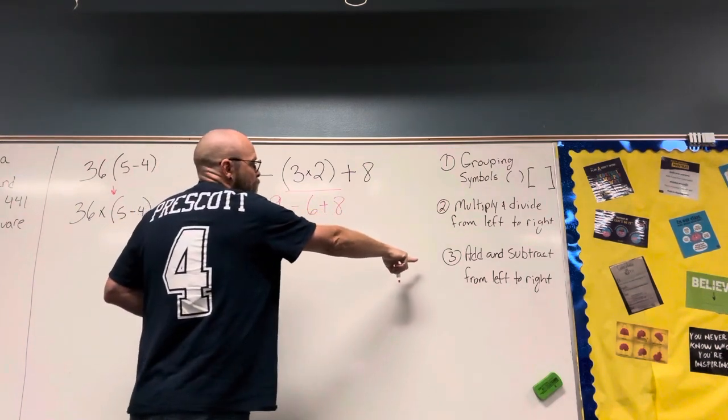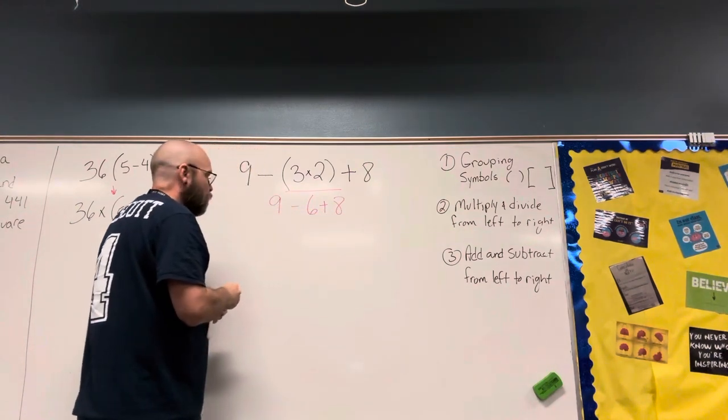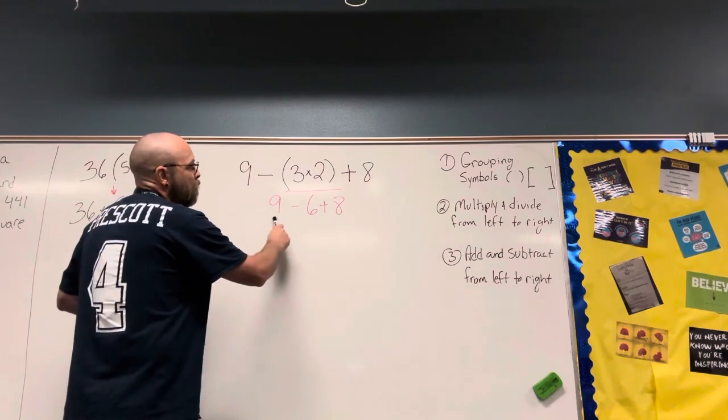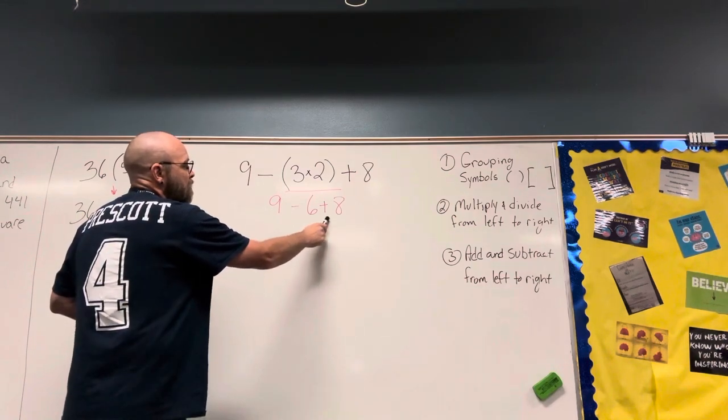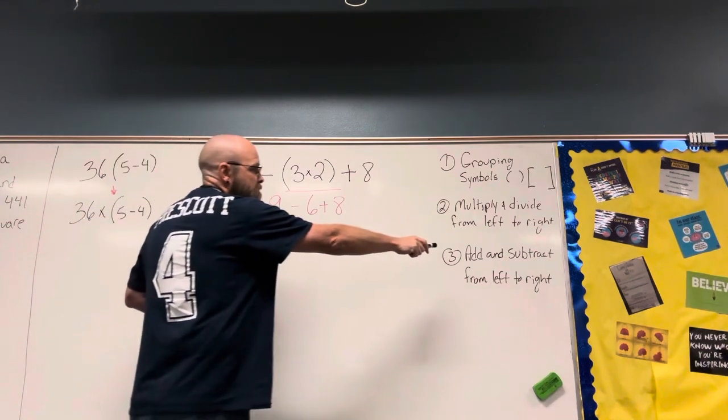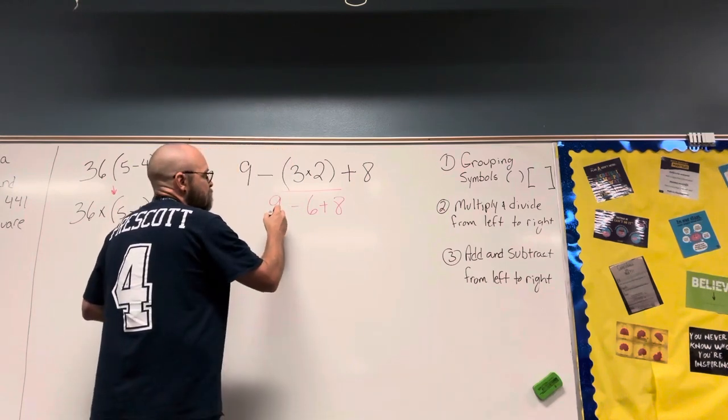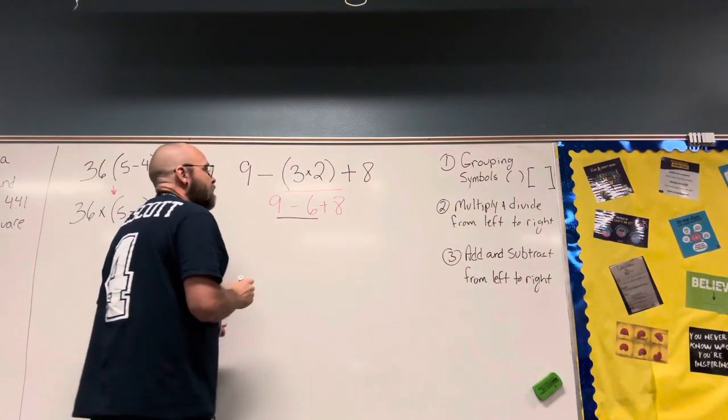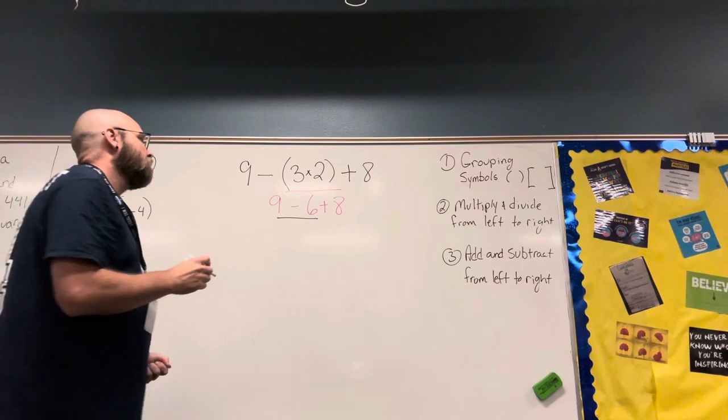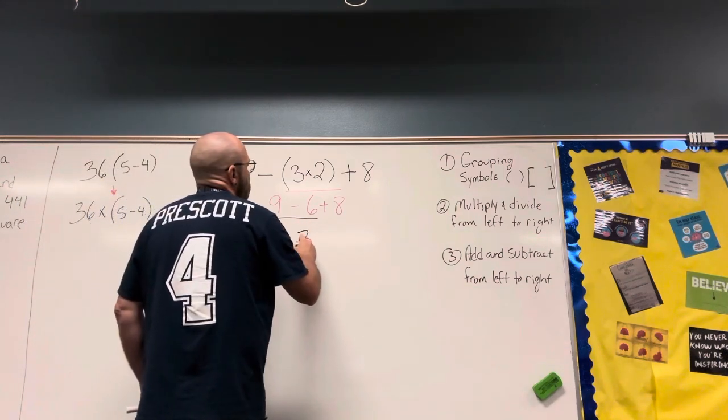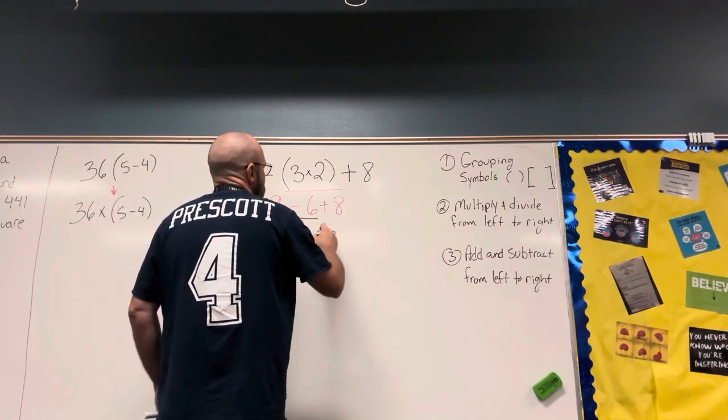Or division, so now we go to addition and subtraction, and we work that from left to right. We have subtraction and addition, so that's the same step, which means we're going to subtract first. That would give us 3. We still have the 8 we haven't used.